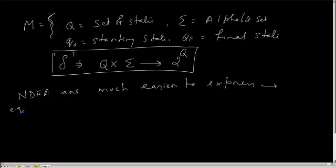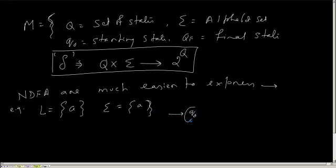Suppose a language is a set of words which has only one A — that is, the language contains only the single element string A, with alphabet A. How will I create an NFA for it? I will create a NFA: starting state Q0, with A it will go to Q1, and that will be my final state. I don't have to mention that if I am in Q1 and again I get an A, what will happen — that I do not have to express in a NDFA.